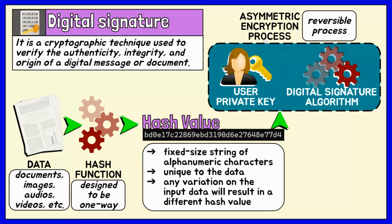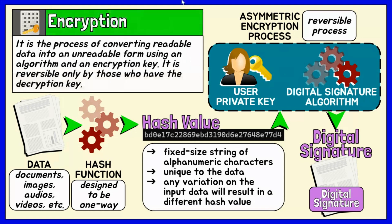Encryption is a process of converting readable data into an unreadable form using an algorithm and an encryption key. The purpose is to protect the confidentiality of the information and make it reversible only by those who have the decryption key.